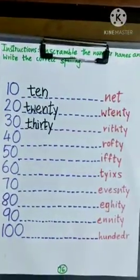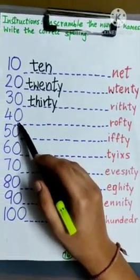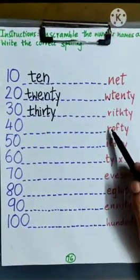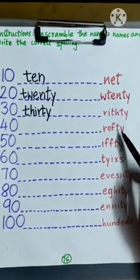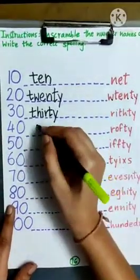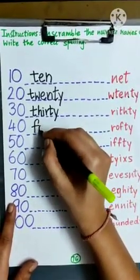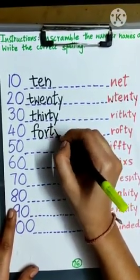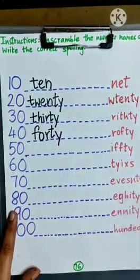Number 40. We are going to write here T-H-I-R-T-Y. First should be F, then O, then R, then T, and last Y, forty.